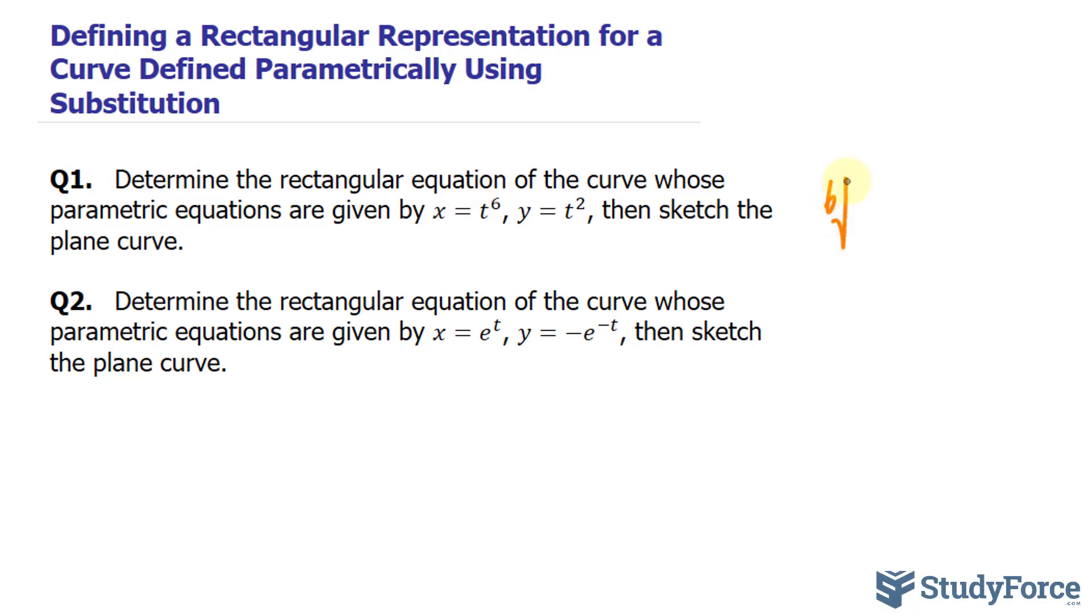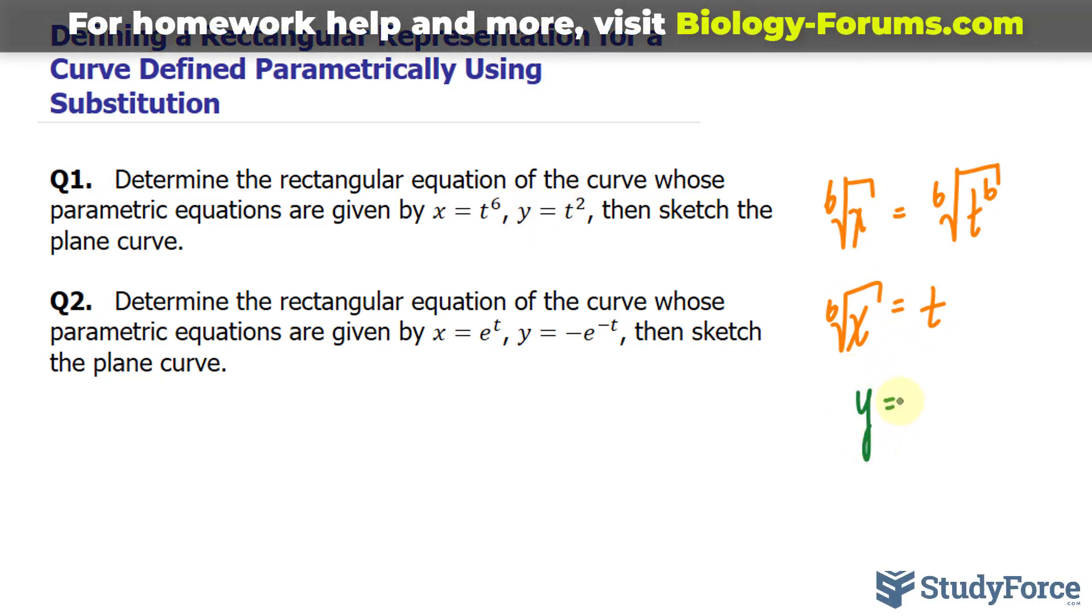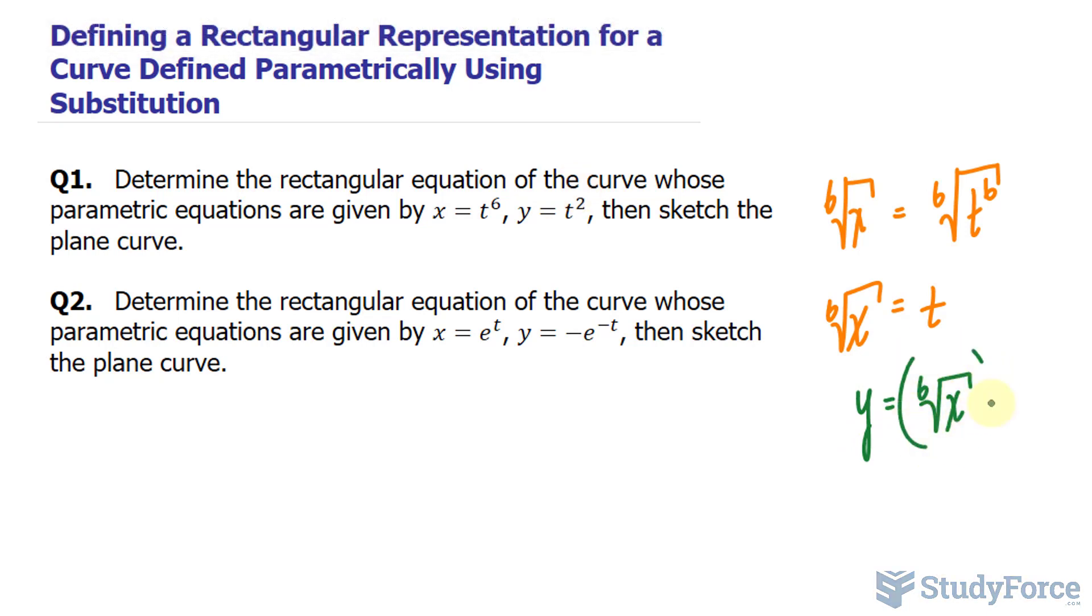So the sixth root of x and the sixth root of t to the power of 6. And what this will give me is x sixth rooted is equal to t and I'll substitute that now into this equation where I have y is equal to instead of t. I'll write down the sixth root of x raised to the power of 2.